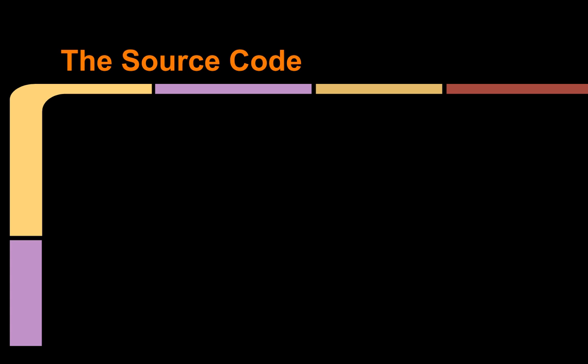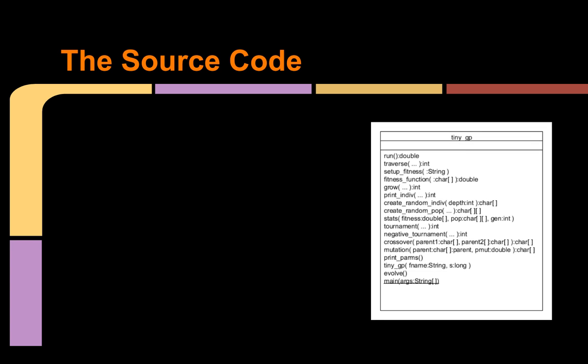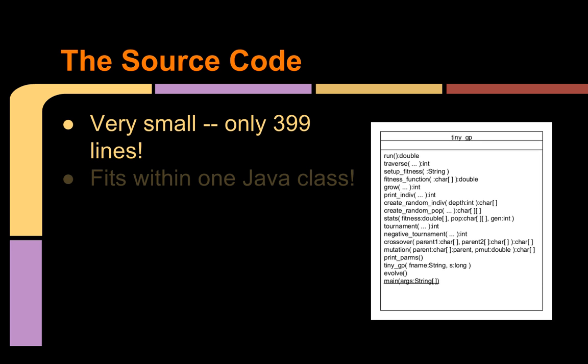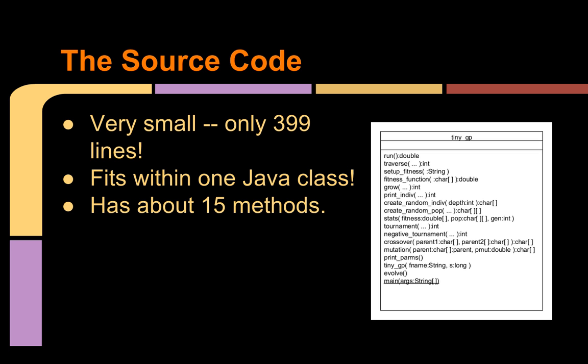It's a very compact program, having only about 399 lines, and conveniently fits within a single Java class, having only about 15 methods, plus the main method, and plus a constructor, as the class diagram shows here.